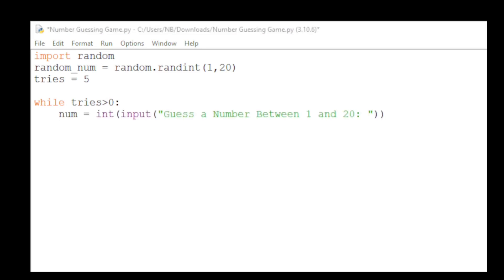Inside our while loop, we will first ask the user to enter a number between 1 and 20, and store that variable as num. This will keep on repeating until tries is less than 0.